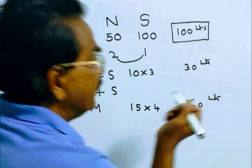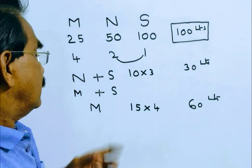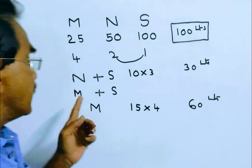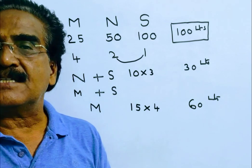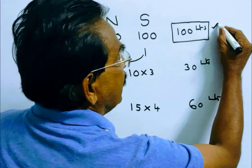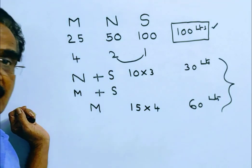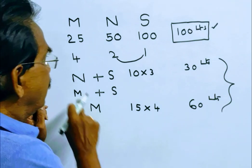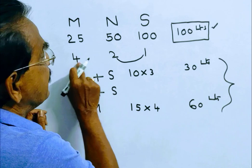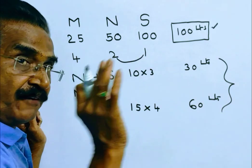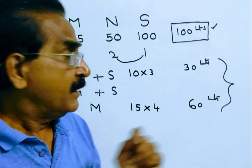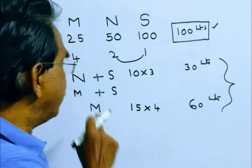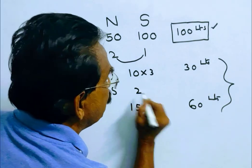Now the remaining water is 10 liters. M and S can fill 4 plus 1, 5 liters per minute. Now the remaining gap is 10 liters. So this 10 liters can be filled by M and S in 2 minutes.